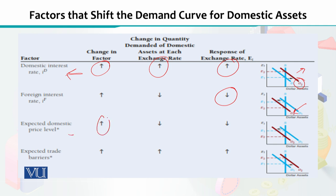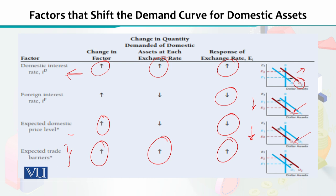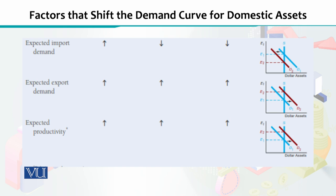If the expected domestic price level increases, that will shift the demand curve upward but your exchange rate will fall. If you expect that the government is going to increase trade barriers, the quantity demanded of domestic assets will go up, the exchange rate will go up, and the demand curve will shift upward. If you expect that import demand will increase, that will cause the demand curve to shift backwards and the exchange rate will decline.